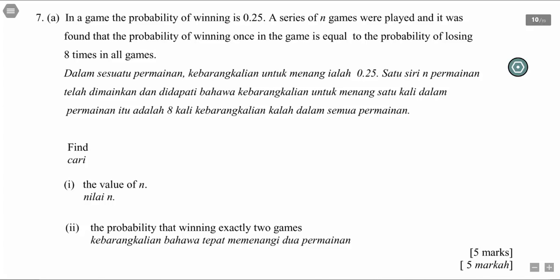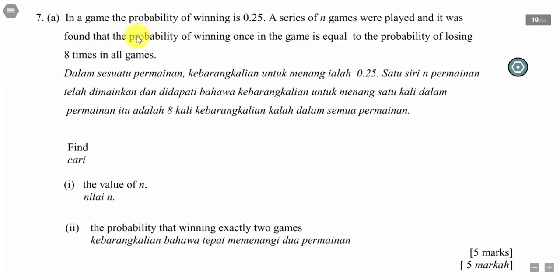Have a look at question seven. This is a probability distribution question for SBMF — I think it's from chapter six. In the games, the probability of winning is 0.25. A series of n games will be played, and it was found that the probability of winning once in the games is equal to the probability of losing eight times in all games.